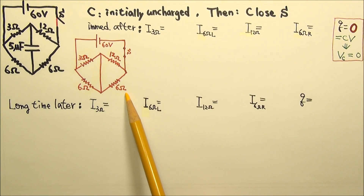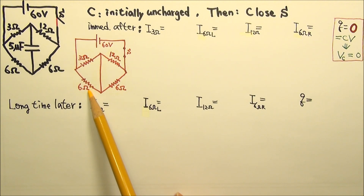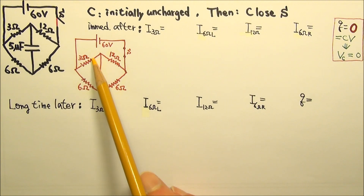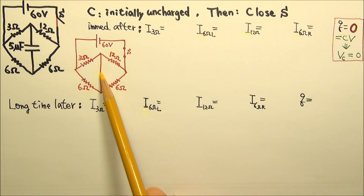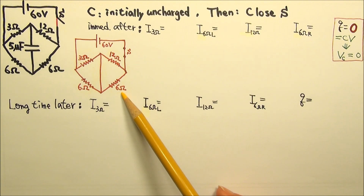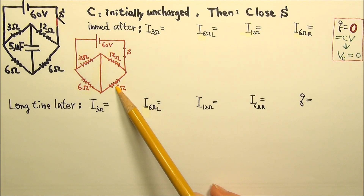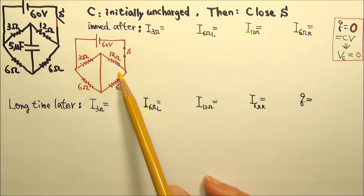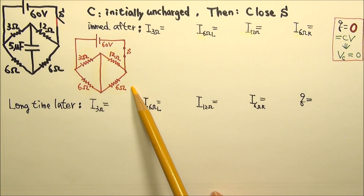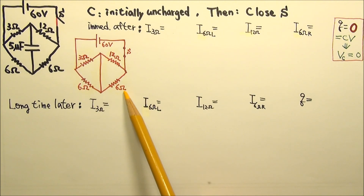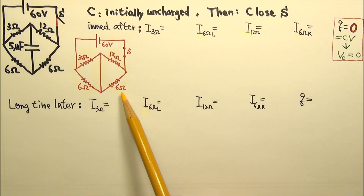In this equivalent circuit, the 3Ω and the left-side 6Ω are in parallel, because they have one end together and the other end is also together. Similarly, the 12Ω and the right-side 6Ω are in parallel. And the two sides are in series.